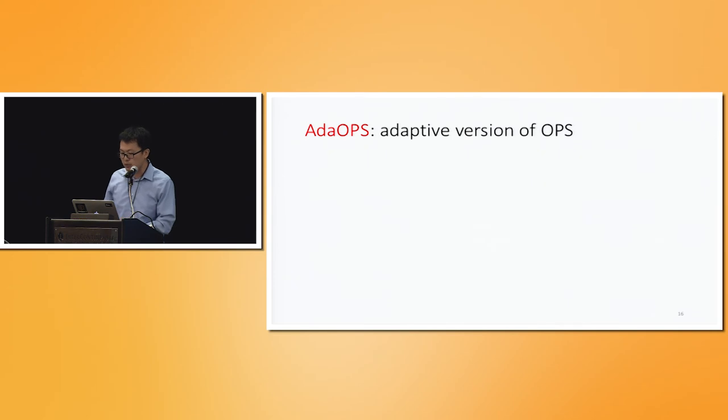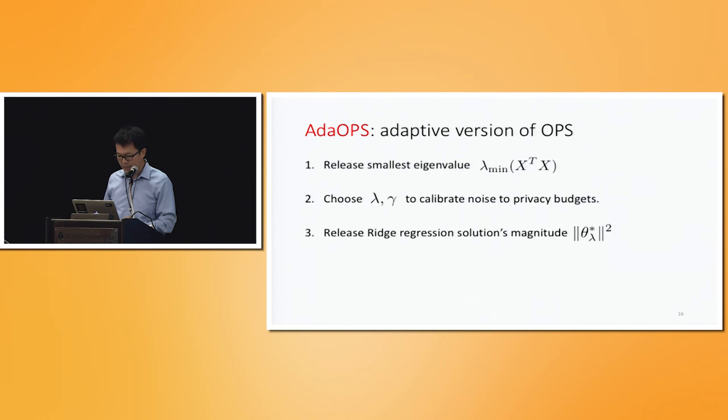And the second algorithm we propose is an extension of the posterior sampling algorithm. So basically, we can first release the smallest eigenvalue, and then we can choose these two hyperparameters for the posterior sampling algorithm. And then we can release the regression solution's magnitude so that we have an empirical version of the bound on the actual space that we need to search within. And lastly, we just sample from the posterior distribution. So this algorithm is more general than the previous one and its analysis is harder.